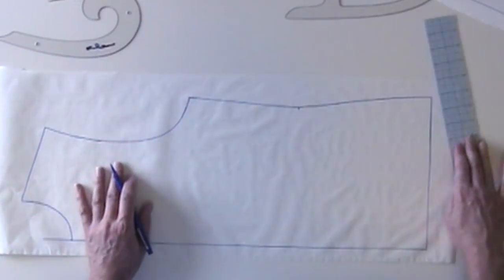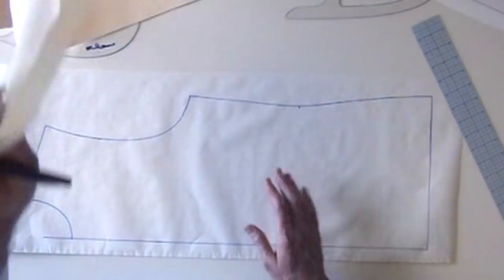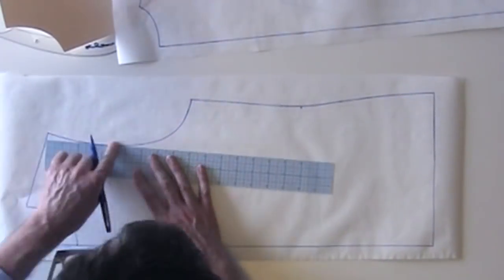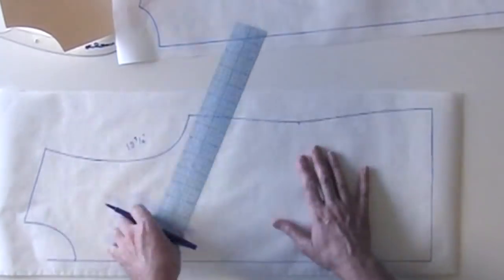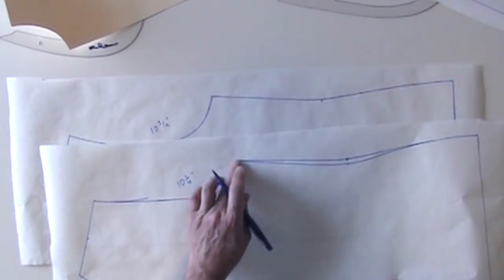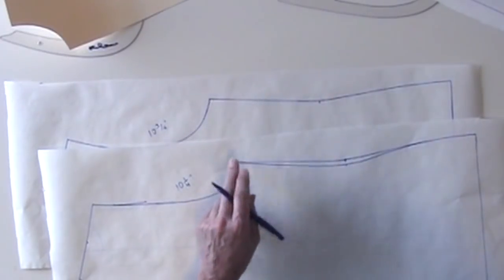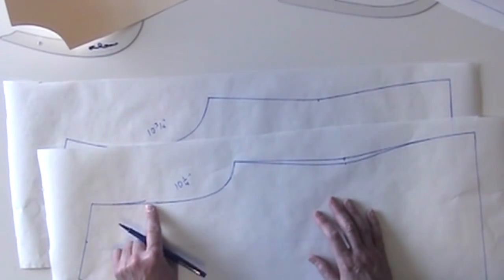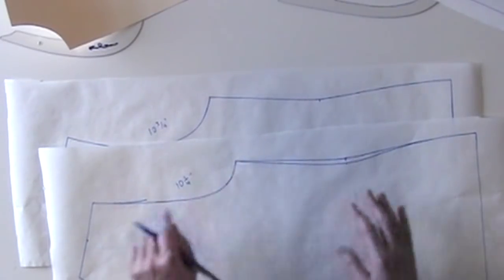Let's measure our armholes back and forth. So my back armhole measures about 10 and a quarter. It's bigger than our previous one, because again, we rotated a dart into it, and we also shifted the side seam out.